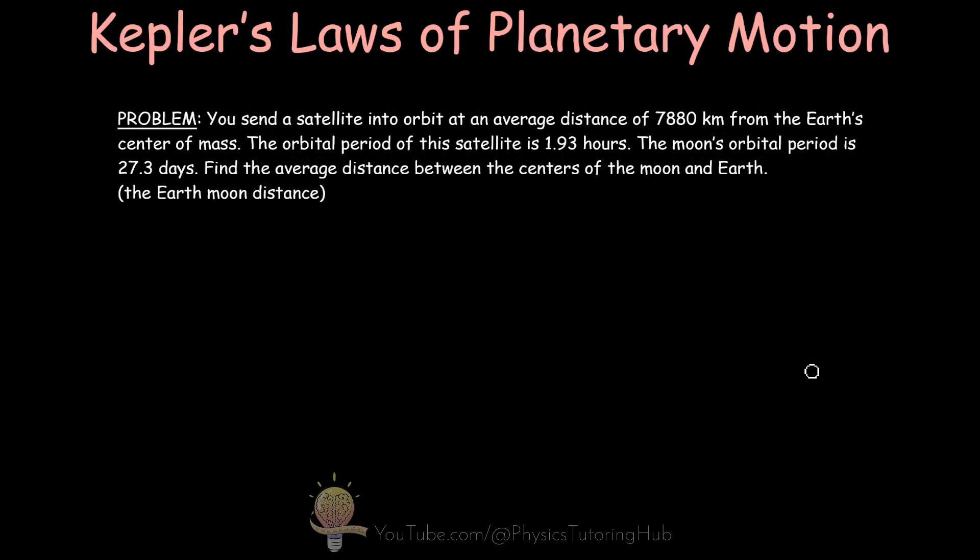So our problem says, imagine you send a satellite into orbit. And this satellite has an average distance of 7,880 kilometers from the Earth's center of mass. The orbital period of this satellite is 1.93 hours. The Moon's orbital period is 27.3 days. Now with this information, we need to use Kepler's third law to find the average distance between the centers of the Moon and the Earth. In other words, the Earth-Moon distance.